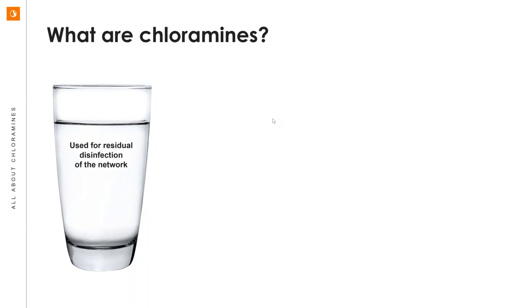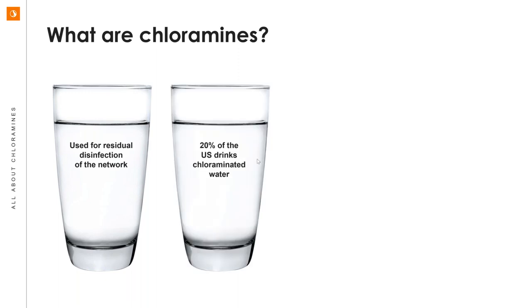First, a very brief primer. Why do we use chloramines at all? What are chloramines? We really disinfect our distribution system networks in one of two ways: we're either adding straight chlorine, or we are using things called chloramines — which is chlorine with just a little dash of ammonia added. It's an alternative form of residual disinfectant; that disinfectant residual will stay in the water and keep that water safe throughout the network once it leaves the treatment plant, right through to customer taps. About 20% of the U.S. right now drinks chloraminated water.